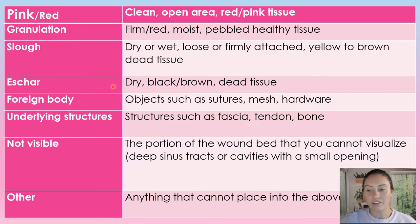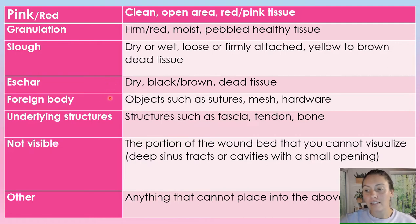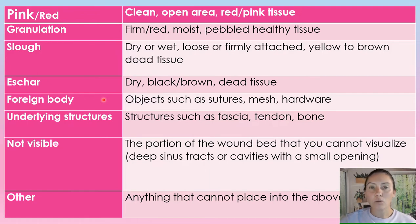Then we have eschar. This is our dry black to brown dead tissue — it's just dead tissue and it's very hard.